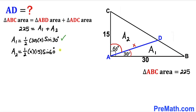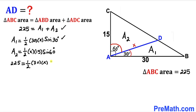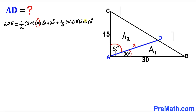Now that we have A₁ and A₂, let's plug them into the equation. So 225 equals one half times 30 times x times sine of 30 degrees, plus one half times x times 15 times sine of 60 degrees. Now we are going to solve this equation for x.